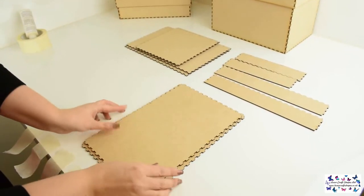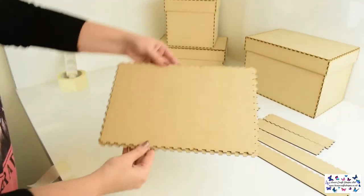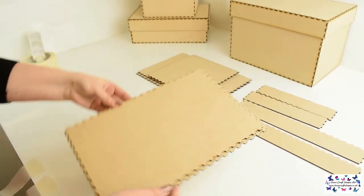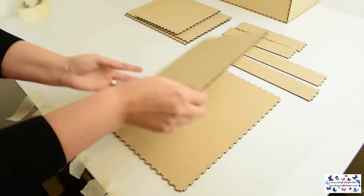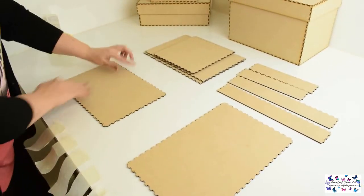You want to take the two base pieces first, lay these on top of each other and you will see that they are two different sizes. You want to take the smaller of the two and this is the base piece for the box.